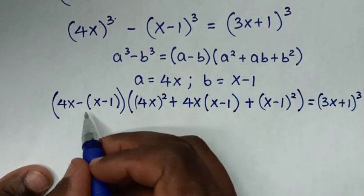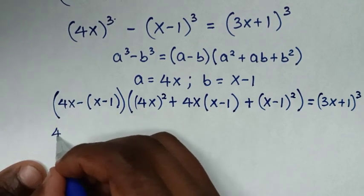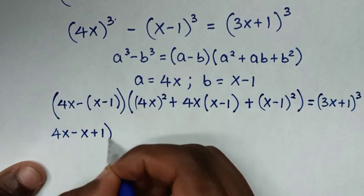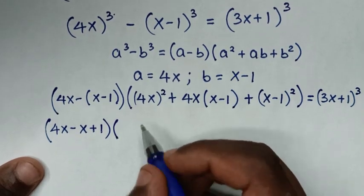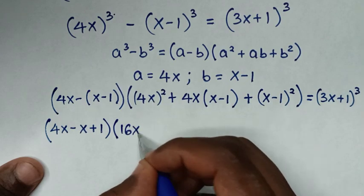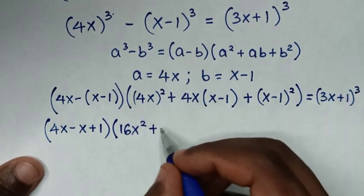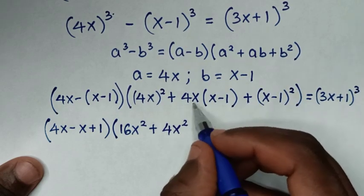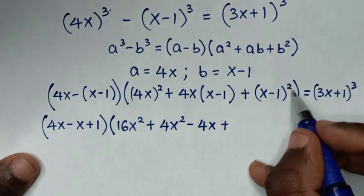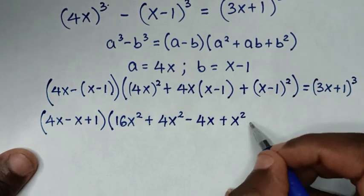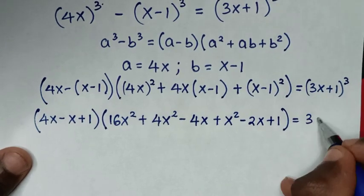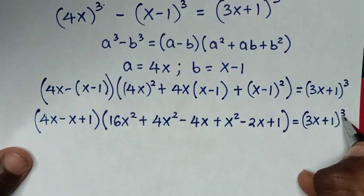In the next step, we open the inner bracket. So we get (4x minus x plus 1), and then we expand (4x)² to get 16x², then 4x times (x-1) gives 4x² minus 4x, and (x-1)² expands to x² minus 2x plus 1. This equals (3x+1)³.